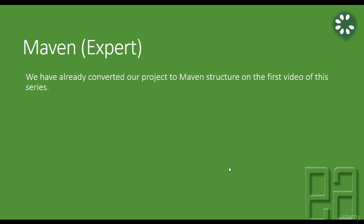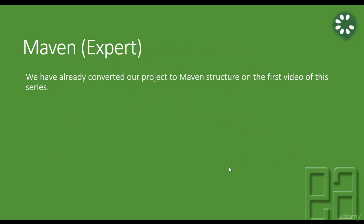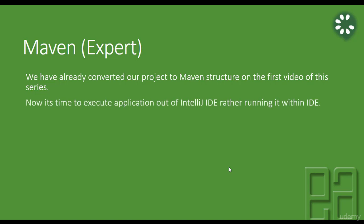We have already converted our project to Maven structure in the first video of this series. In section 1, we converted our project to a Maven project by adding the framework, and the framework structure changed. We are going to make use of that framework structure right now to perform some operations. It's time to execute the application outside of IntelliJ IDE rather than running it within the IDE.